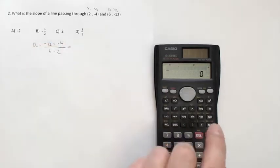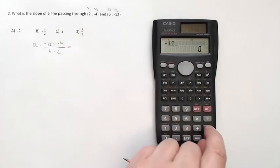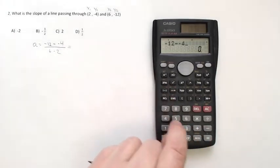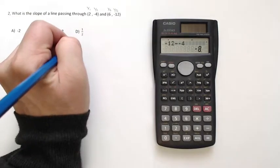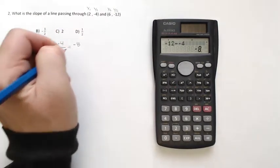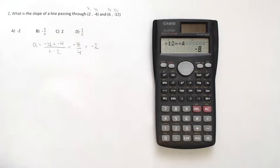So, come over to the calculator here and pay close attention. Negative 12 minus negative 4 is going to give you negative 8. And then that's going to divide by 4, which is going to be equal to negative 2.